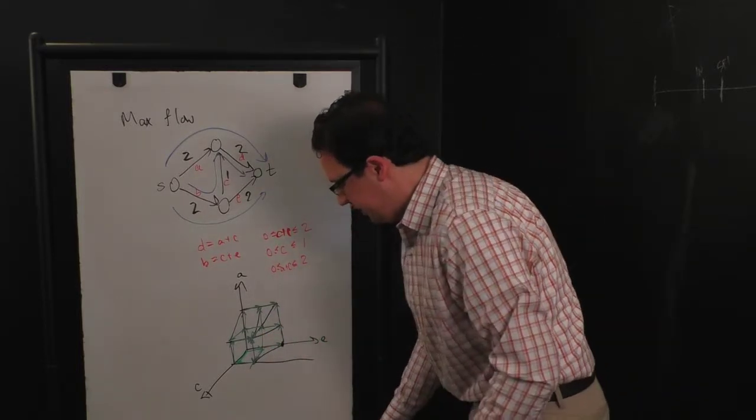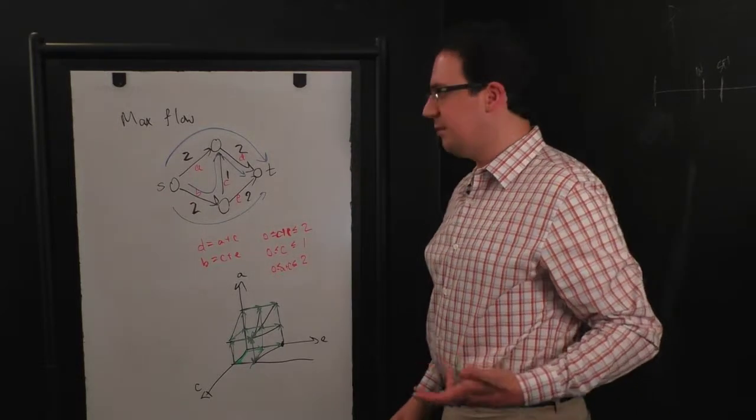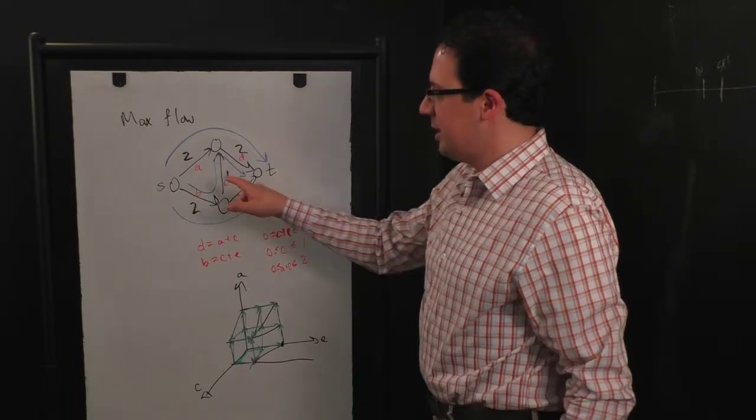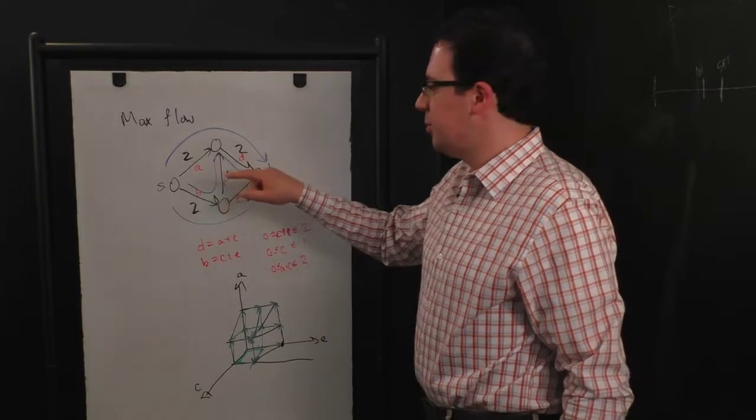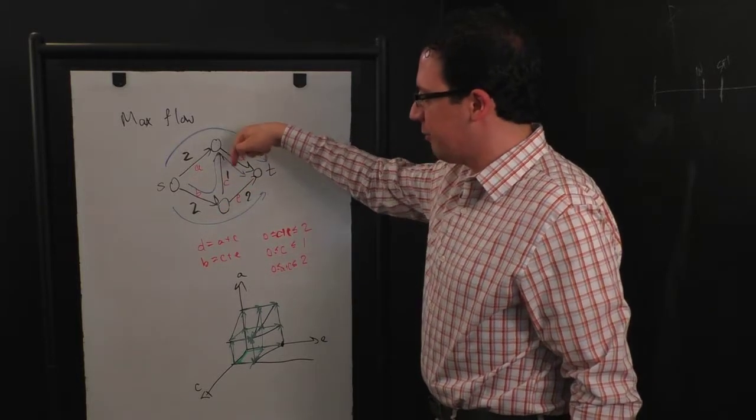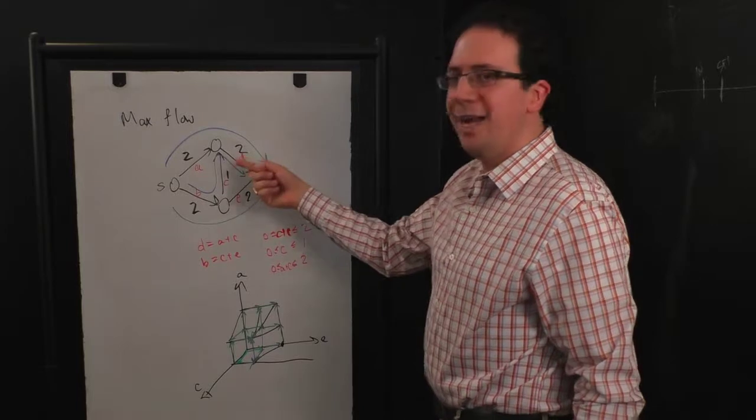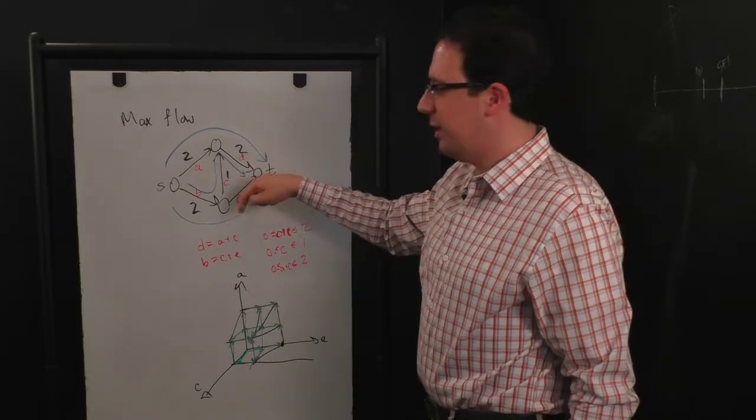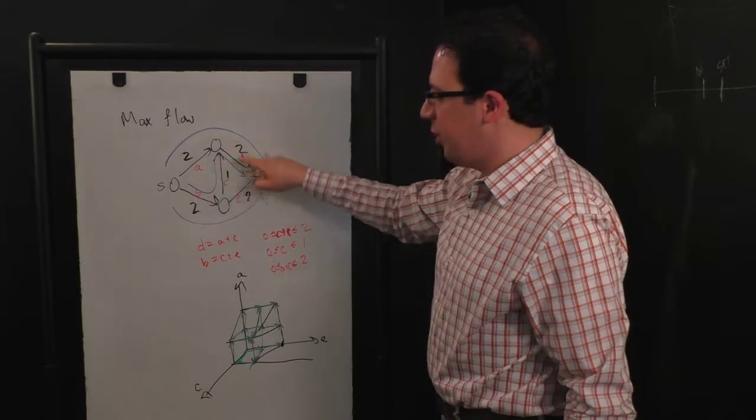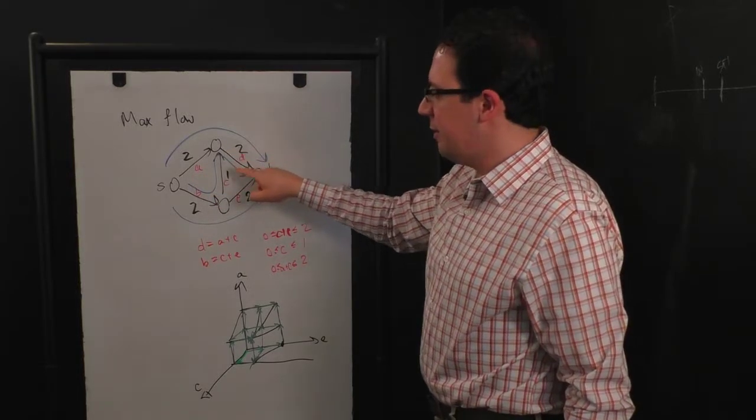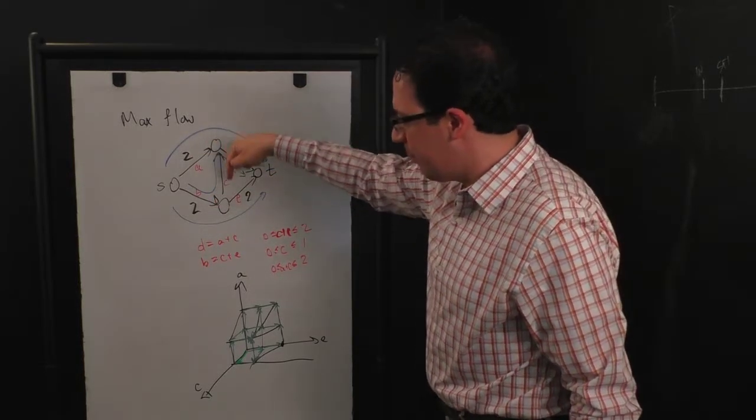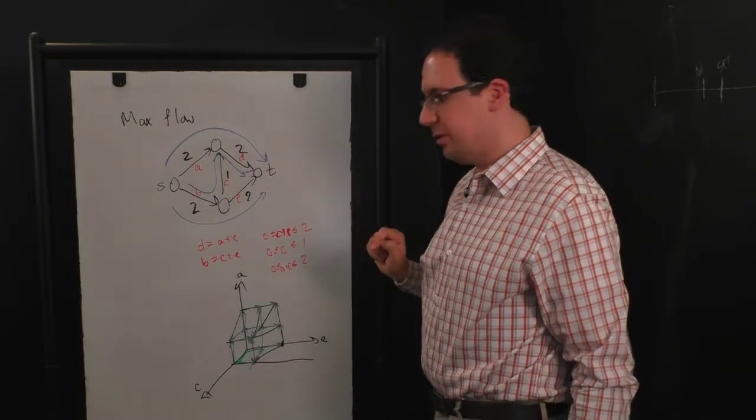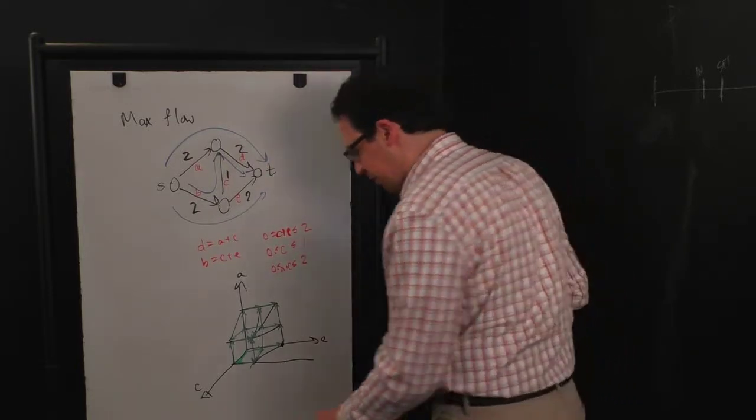So I can instead allow myself to make a slightly different kind of move, which is I'm now going to allow myself to push water the reverse way along an edge as long as I had capacity there. So I can never have negative flow in an edge. But once I've put one flow here, then I can then push flow back that way and let it cancel out. So this is a new kind of move that I'm going to allow myself.